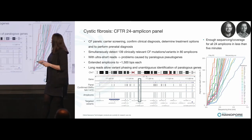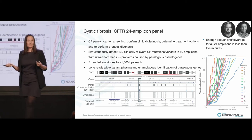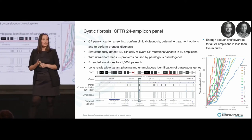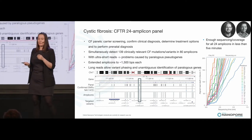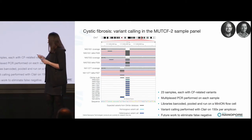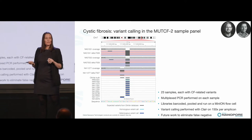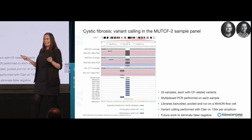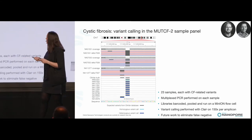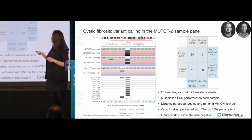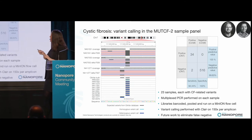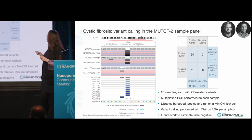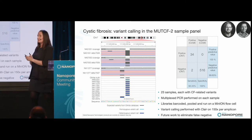We think this 24-amplicon panel is a great way to use as a genetic test, and it's ultra fast. We found that we only need 150x coverage to call these SNPs, and within the first five minutes of sequencing we already reach 150x coverage. So really there's no need to use a MinION for this — you probably should use a Flongle, or alternatively you multiplex. We used the mut-CF2 panel, which has 23 different samples that all have at least one clinically relevant CF mutation. We barcoded them, pooled them, and loaded them on a MinION. In this setting, we got 34 out of 36 mutations called correctly.